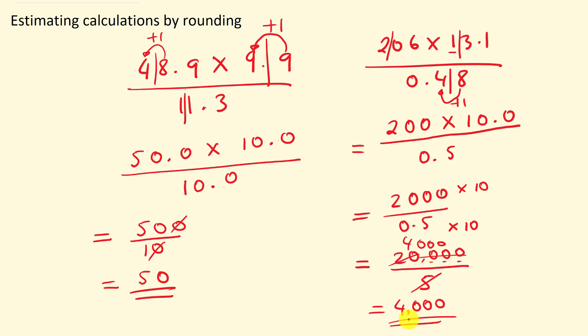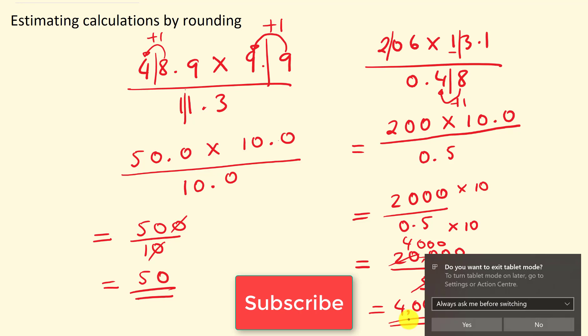That's it — we've covered estimating calculations by rounding to one significant figure. To recap: when you see an estimation question, look out for the keyword 'estimate'. Always round the numbers to one significant figure first, then do the calculations. Our next video will be on factors, multiples and primes — please consider subscribing. Good luck with your mock exams and GCSE maths exams. Mr. Mahmood, helping you do better in maths.